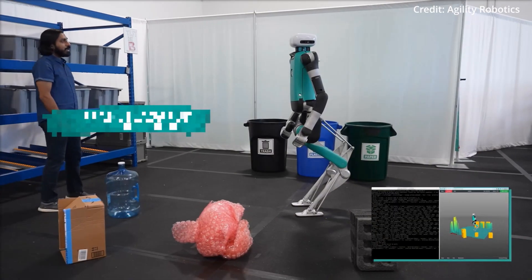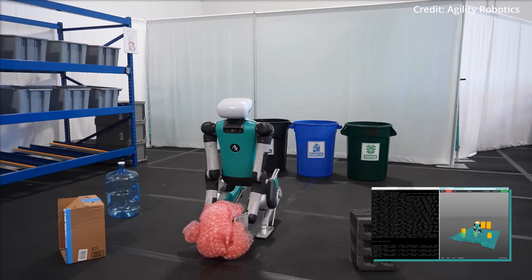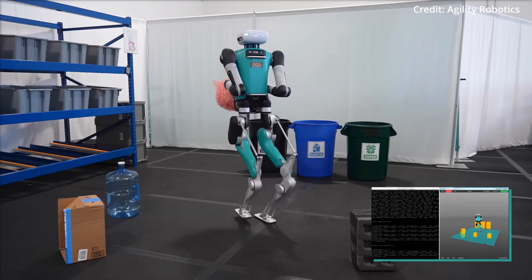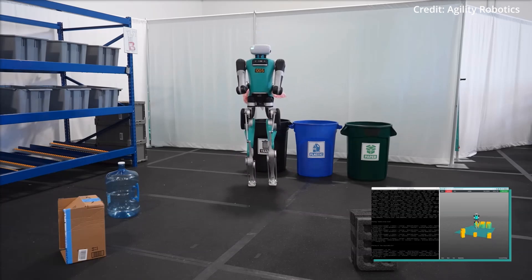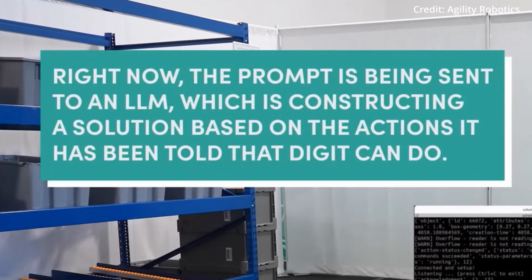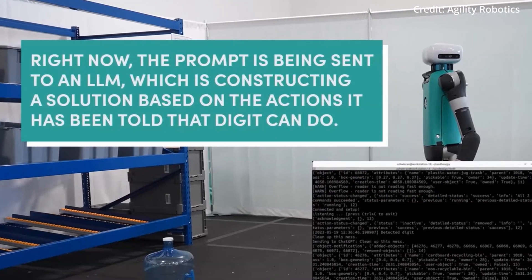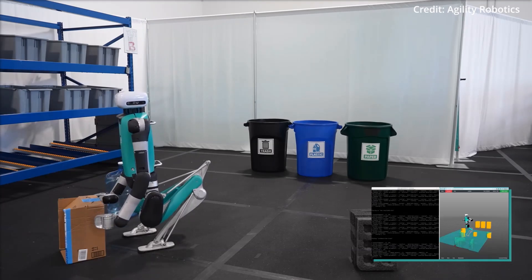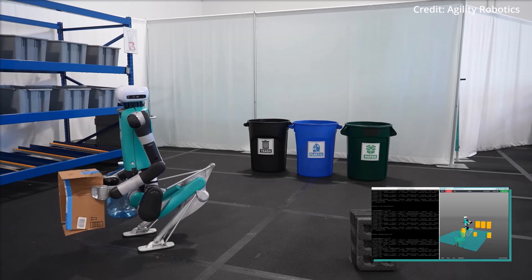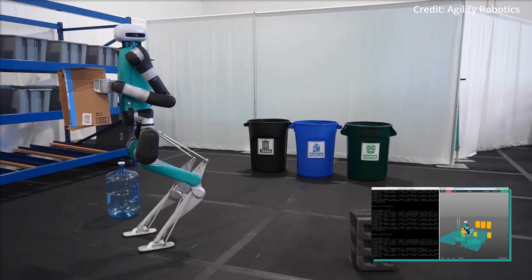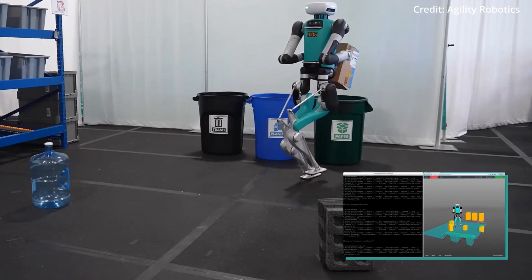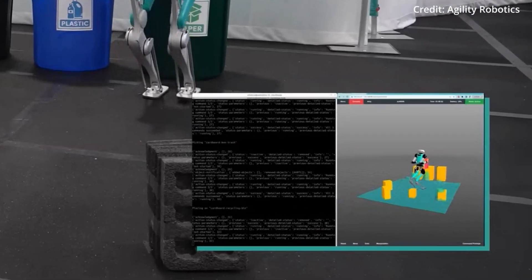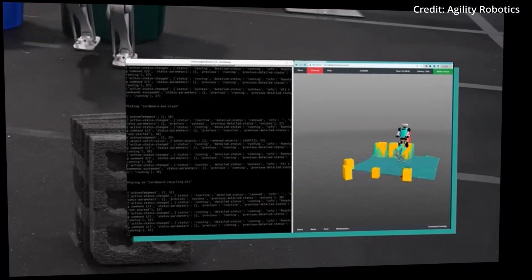In a demonstration, Digit starts out by visually detecting trash on the floor and receives a voice command telling it to clean up the mess. Impressively, Digit then uses a large language model to interpret how best to achieve the stated goal. Furthermore, Digit requires no explicit instructions on how to clean or what a mess is, but instead simply figures it out from the conversational input to accomplish the task in the real world.